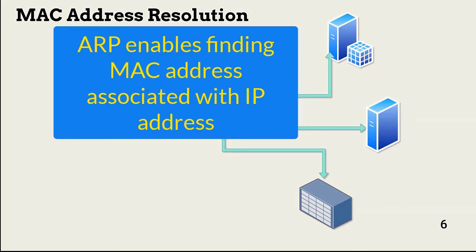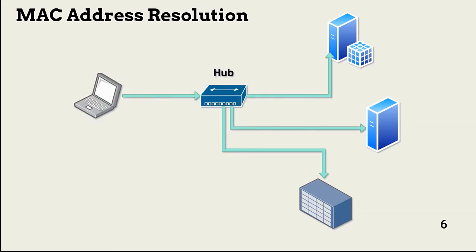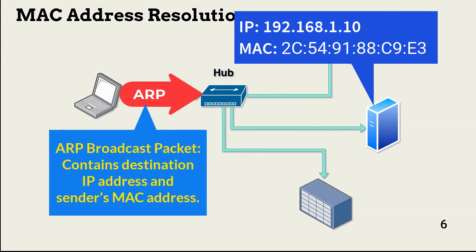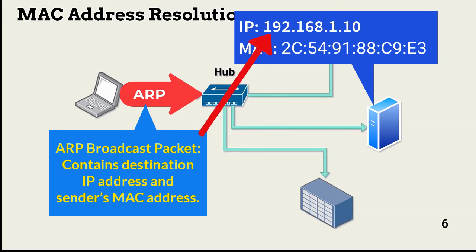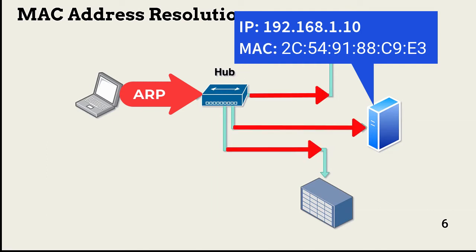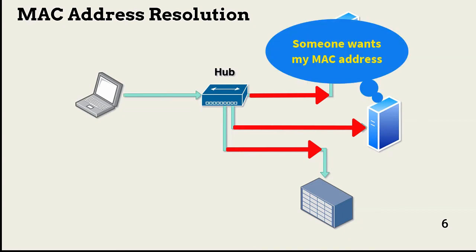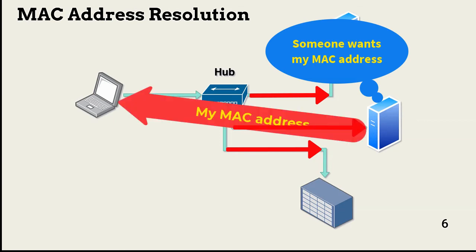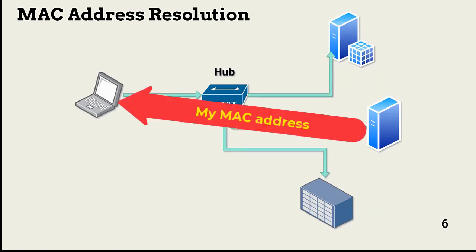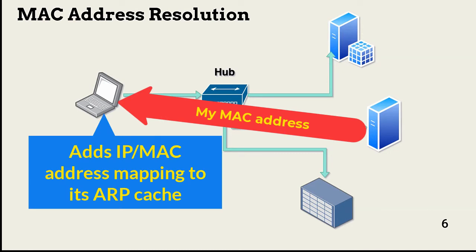This requires a resolution of the target device's IP address to its MAC address. Address resolution begins when the laptop broadcasts an ARP packet with the target system's IP address. Each device looks at the packet to see if its MAC address is requested. If the ARP packet's target IP address matches the device's IP address, it responds to the laptop with its MAC address. Once the laptop receives the MAC address, it adds it to its ARP cache and initiates a session with the target.